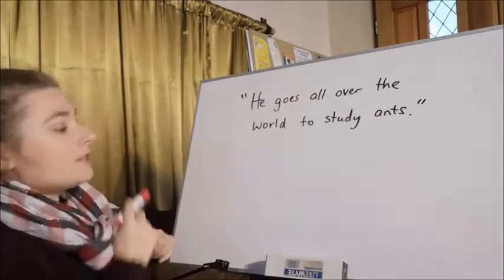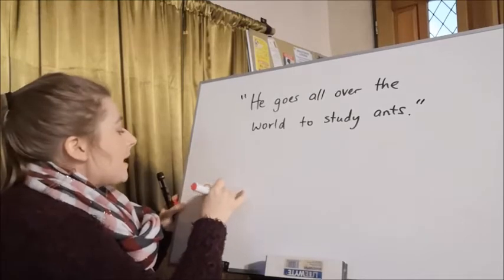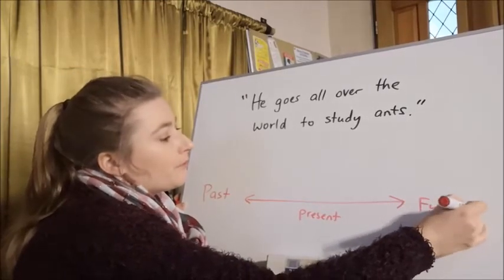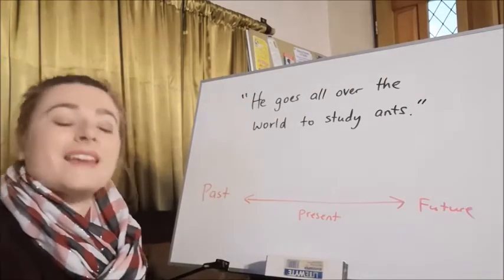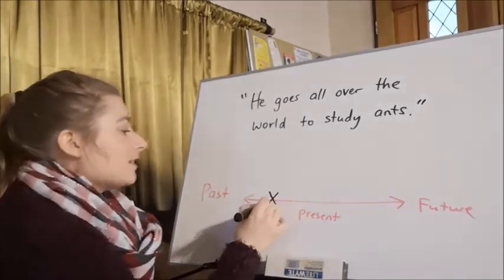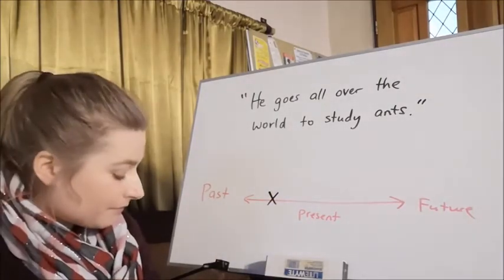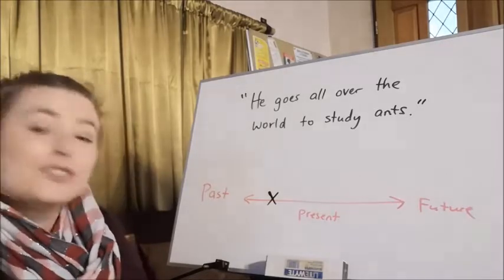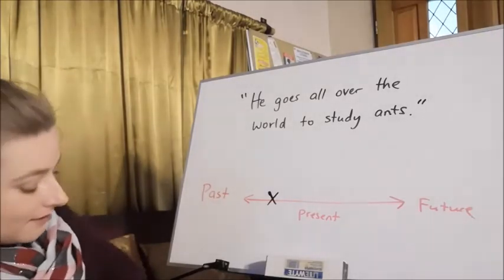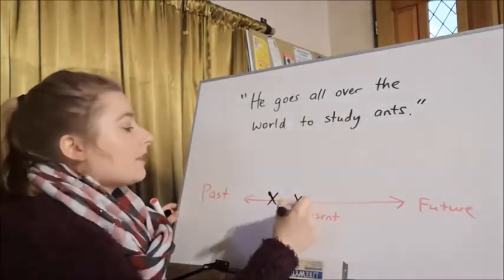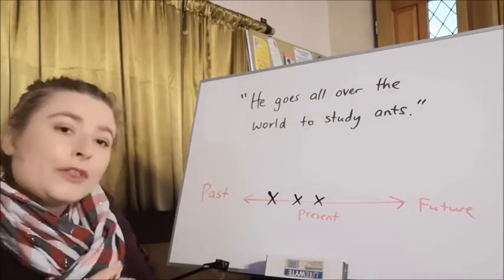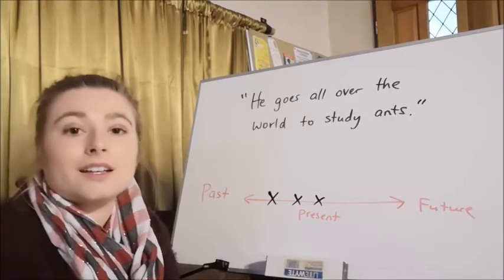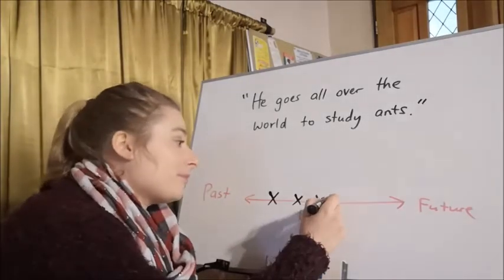Okay, what about this one? When did he first start going all over the world? Was it in the past? Present? Or future? Yep, in the past. Does he still travel around the world? He does. How do you know? That's right, goes. Okay, so it's in the present. Do you think he will continue to go all over the world to study ants? Probably. He loves ants. But we don't know for sure.